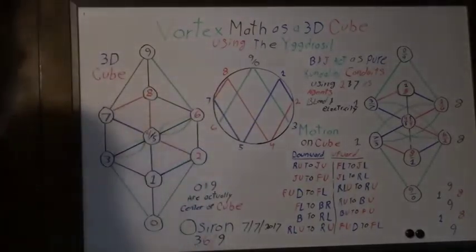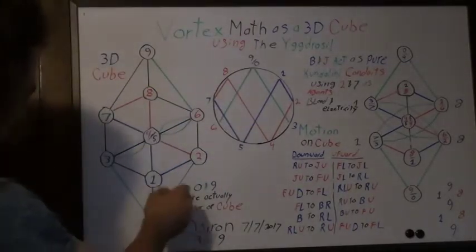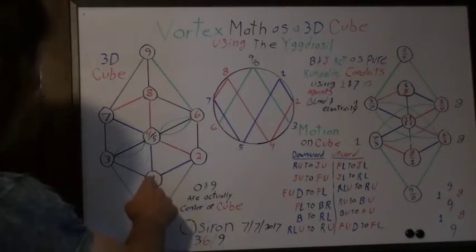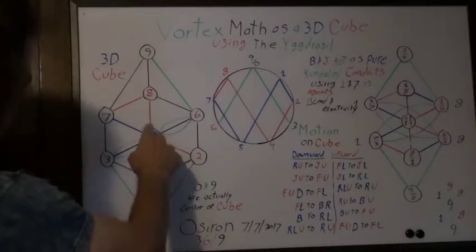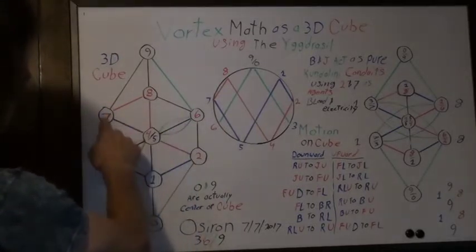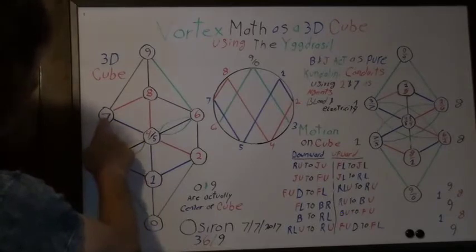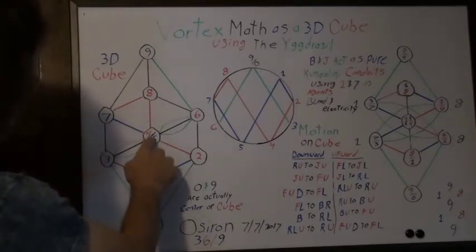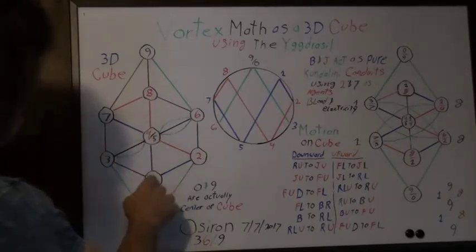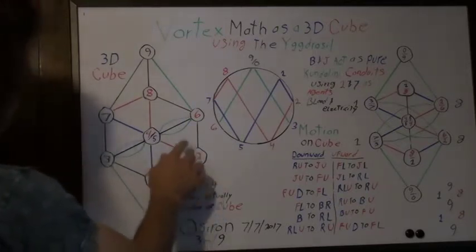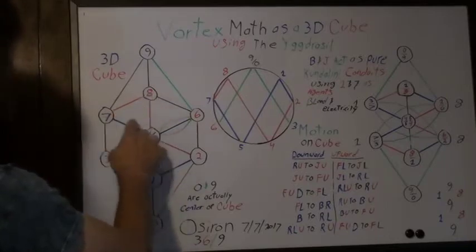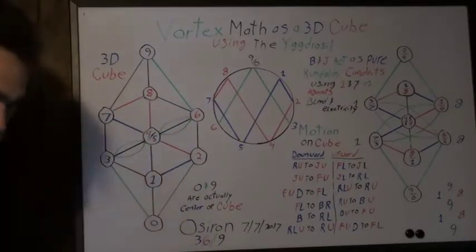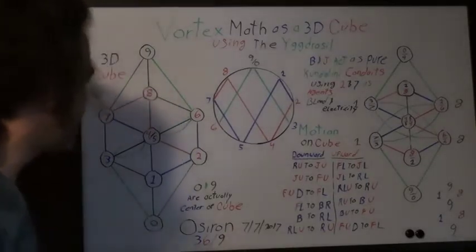Here's what happens with the Yggdrasil when you apply vortex math principles. You got zero here, but here's one. 1 plus 1 is 2, 2 plus 2 is 4, 4 plus 4 is 8, 8 plus 8 is 16, 16 plus 16 is 32, 32 plus 32 is 64. So what it's doing is going over, in, out, over, in, out, something like that.